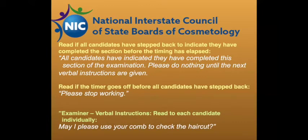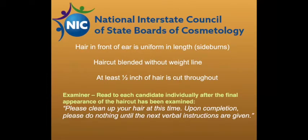Once the candidates have stepped back, the proctor reads: all candidates have indicated that they have completed this section. Please do nothing until the next verbal instructions are given. The examiner will go to your first candidate, hold their hand out, and ask: may I please use your comb to check the haircut? Please have your candidate hand the examiner the comb. In checking the haircut, the examiner is looking to make sure that the hair in front of the ear is uniform in length, that the haircut blends without weight lines, and that the candidate has cut at least one half inch of hair throughout.